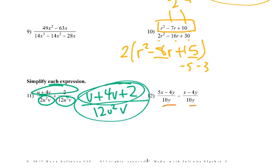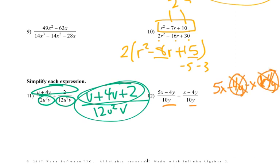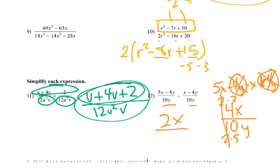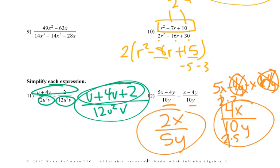For number 12, we've both got 10y's already. So I'm going to go 5x minus 4y minus x minus a negative 4y, which would be plus 4y. The negative 4y and positive 4y cancel. 5x minus x would be 4x, all over 10y. Can I simplify this further? Sure — 4 is 2 times 2 and 2 times 5, so the 2's cancel, and I'd have 2x over 5y. But if you just got 4x over 10y, I'm happy with that too.